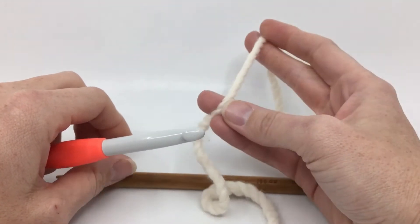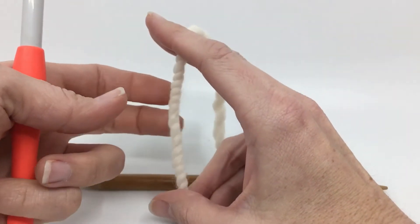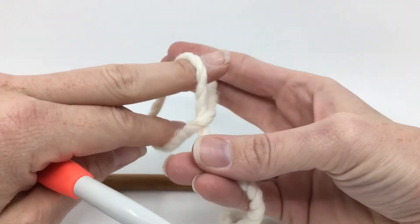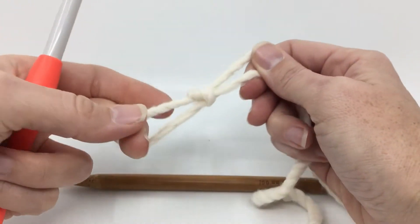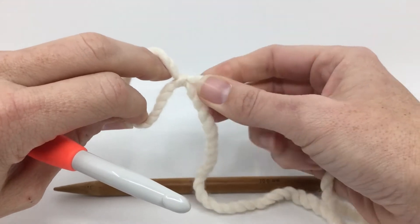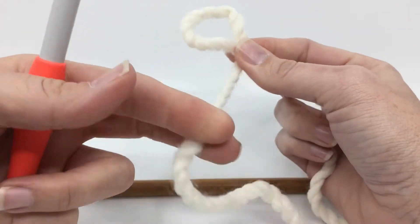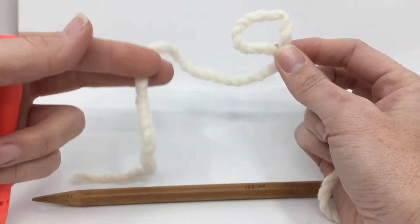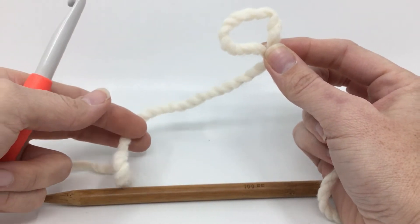So we are going to start with a slip knot. We take our yarn, here's our tail, flip it, grab the working yarn, pull it through and now you have a slip knot. Notice I did not have to pull out a long tail. You don't need it for this cast on. You just do a long enough tail to weave in.